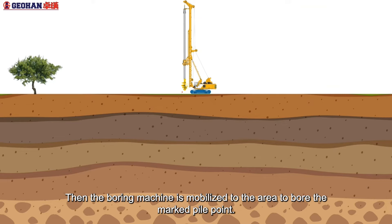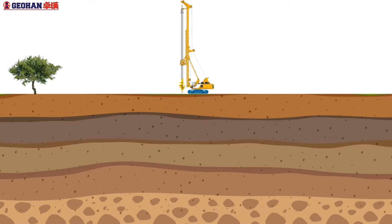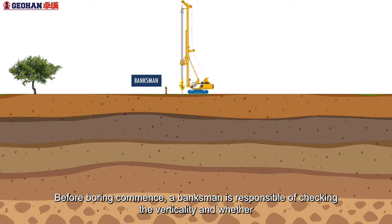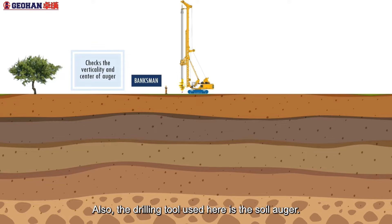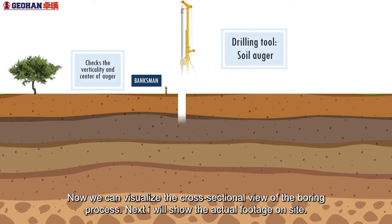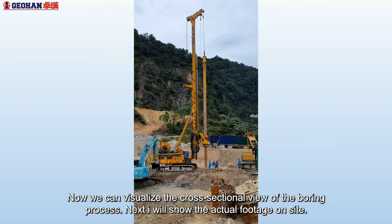Then, the boring machine is mobilized to the area to bore the marked pile point. Before boring commences, a banksman is responsible for checking the verticality and whether the center of the auger is precisely above the marked pile point. Also, the drilling tool used here is the soil auger. Now, we can visualize the cross-sectional view of the boring process. And next, I will show the actual footage on site.